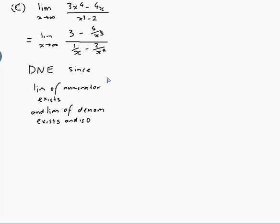Now let's look at part (d): the limit as x approaches 0 of sin(1/x). It doesn't look like the others — it involves sine, and x approaches 0 rather than infinity. But as x goes to 0, 1/x goes to infinity, so maybe it is a limit at infinity after all. Let t = 1/x. As x goes to 0, t goes to infinity.